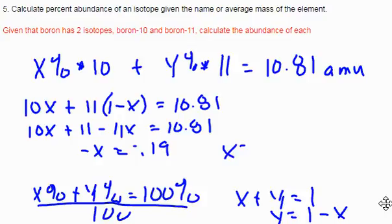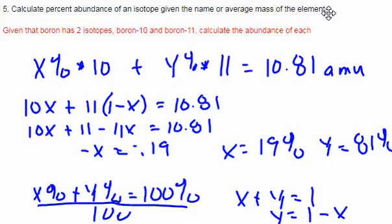So X is 19%. And if X is 19%, then I know Y must be 81%.